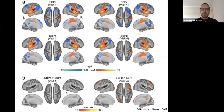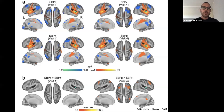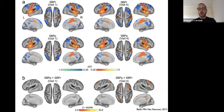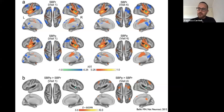In sintesi, abbiamo un cambiamento strutturale di alcune aree chiave interocettive e della pain matrix, incluse strutture sottocorticali. Oltre ai cambiamenti strutturali, ci sono anche cambiamenti di tipo funzionale, cioè nel rapporto che le varie aree cerebrali hanno tra loro. Un aspetto molto interessante è stato pubblicato su Nature Neuroscience da Baliki, che ha dimostrato una differenza funzionale nell'attività prevalentemente dell'insula. L'insula viene ancora una volta presa in considerazione, sia per il cambiamento strutturale sia per quello funzionale.